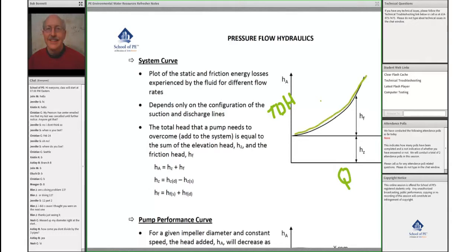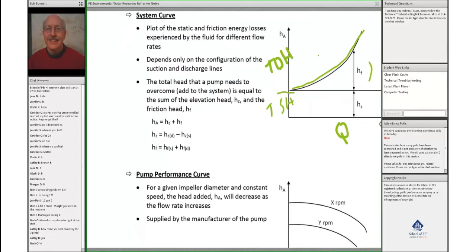It starts at that total static head, which is the difference in water surface elevations from the source to the destination. There are some equations that show that, and the head loss due to friction of course is the head loss due to friction on the suction side and the discharge side.